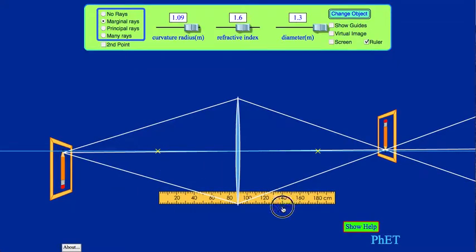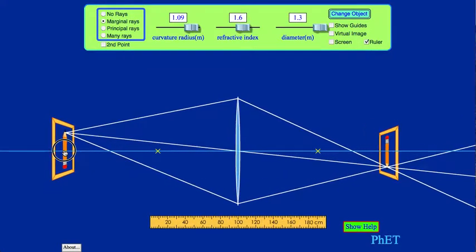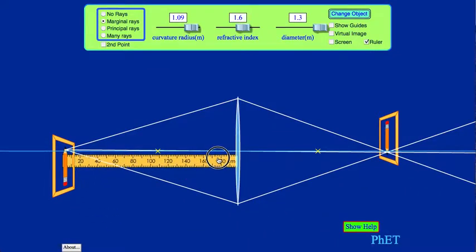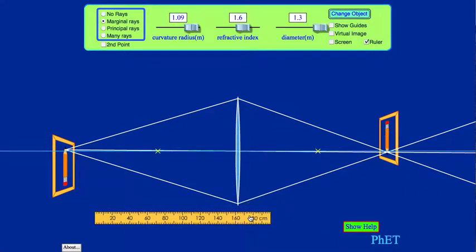Now the remaining part of the lab you're going to take the object over here and move it to different locations. The first location that you have to move it is a distance that's larger than twice the focal length of the lens. So if my focal length is 90 centimeters I have to move it further than twice 90 which is 180. Let's go ahead and say that I'm going to move it a distance of 190 centimeters.